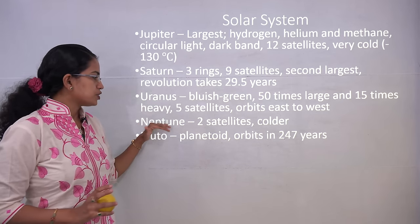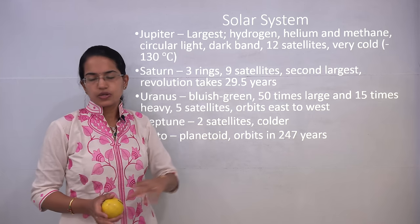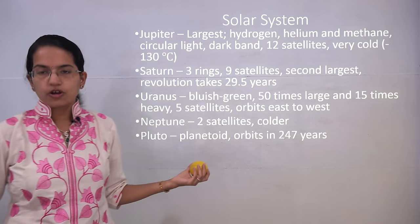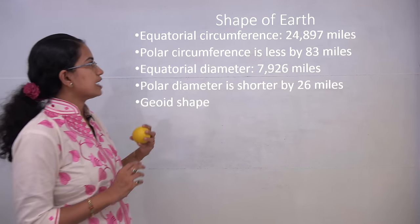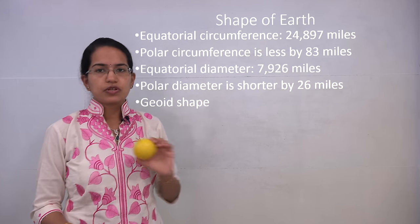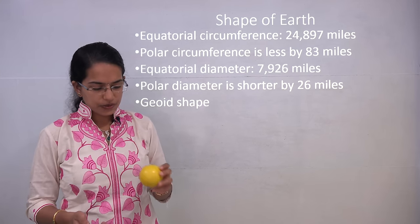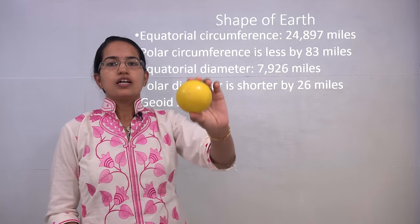Neptune has 2 satellites and is very cold. Pluto is now considered a planetoid. The most important topic we will understand today is the shape of the Earth.